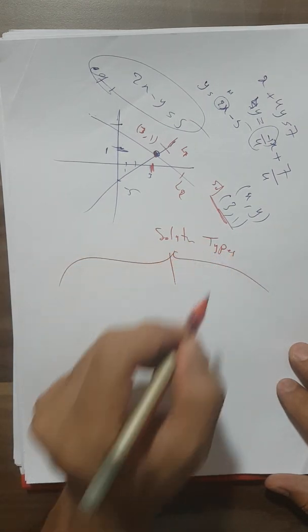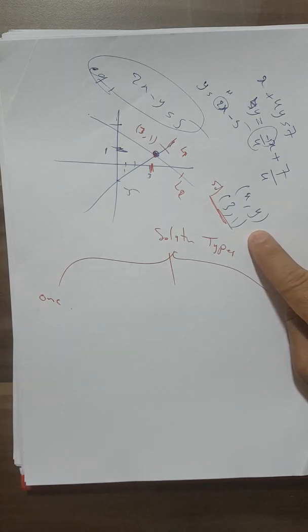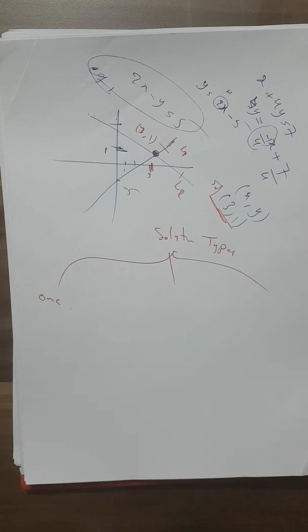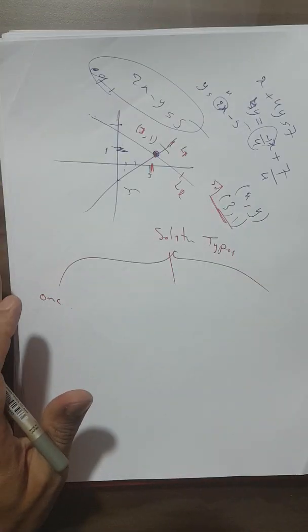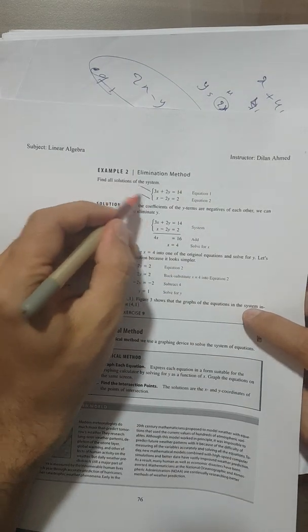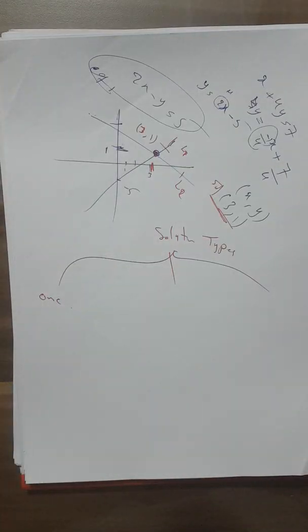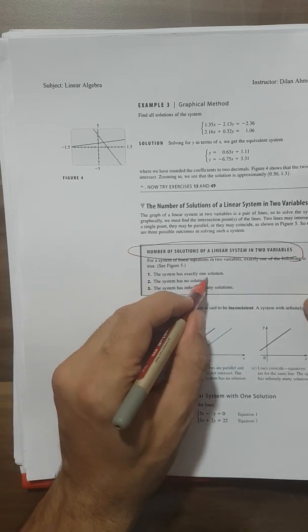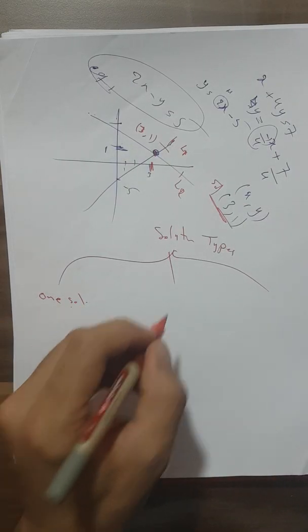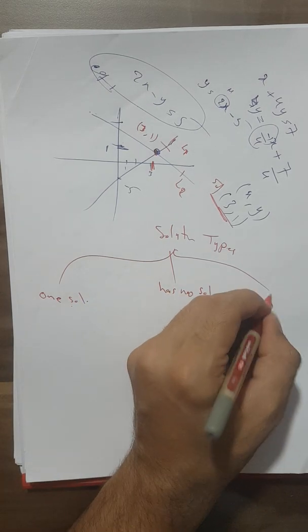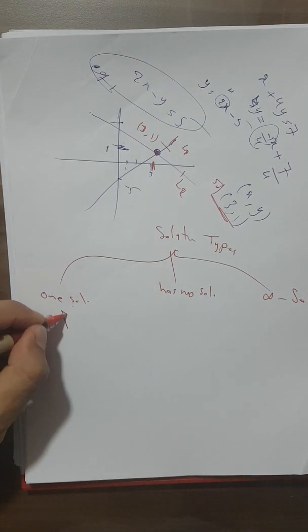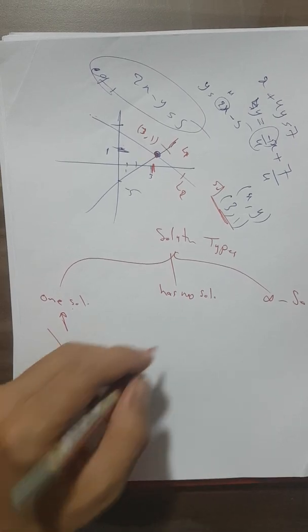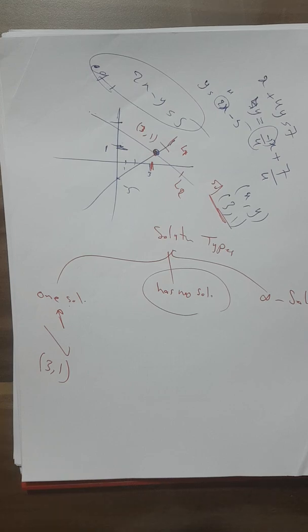There are three types of solutions for a system: exactly one solution, no solution, or infinitely many solutions. I'll leave some examples for you to solve at home, as they are straightforward. Now I will show examples for each type.